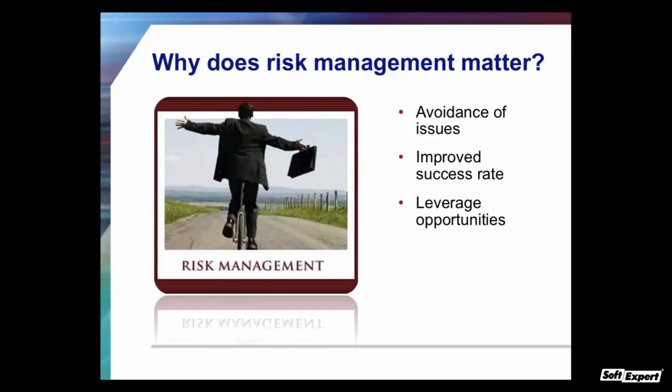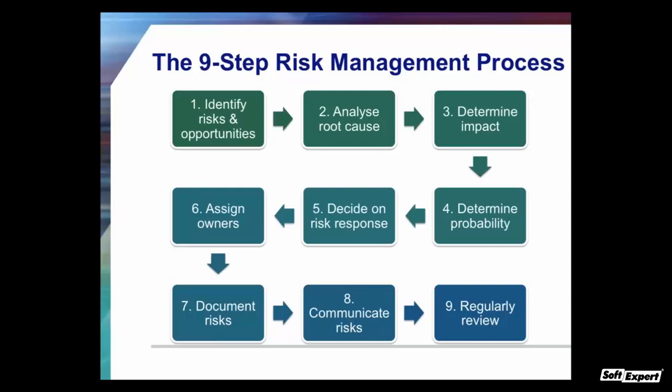We're now going to go through the nine-step risk management process. The first step is to identify risks and opportunities — positive as well as negative. Then we analyze root causes, determine impact, and determine probability. Only then can we decide on the risk responses and who will own them. Next, we document risks in a risk log, communicate risks at weekly status meetings and steering committee meetings, and finally, review what we're doing regularly. We want to be leaders, not just managers — so let me remind you of the differences between management and leadership.